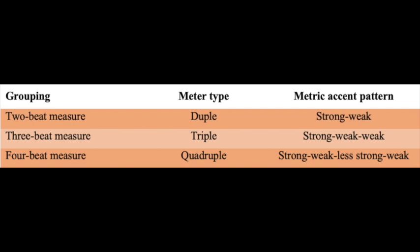4-beat measures, which are probably most common for us in concert band, are said to be in quadruple meter because there are quad — 4 — beats. Their structure is a little bit different: it starts off the same as 2, but our third beat is kind of like a secondary stress beat. So we have strong, weak, less strong, weak — strong, weak, less strong, weak.